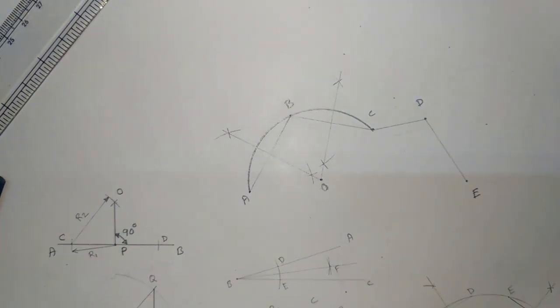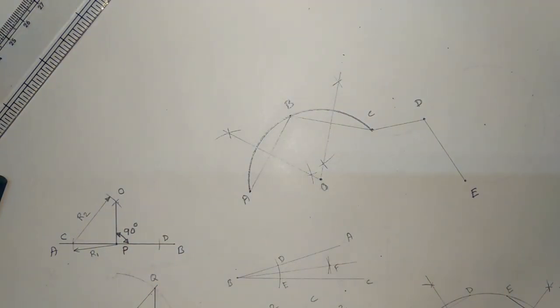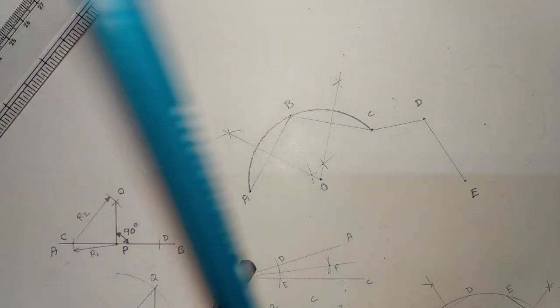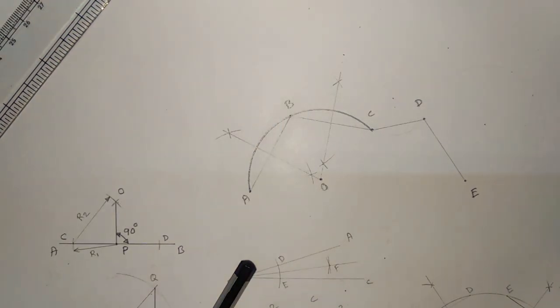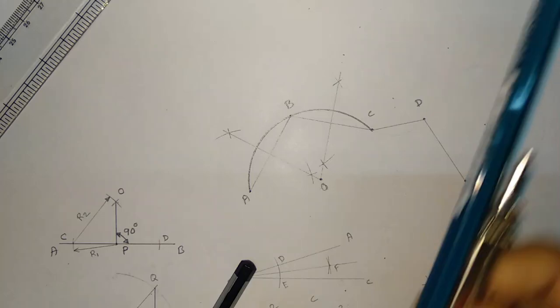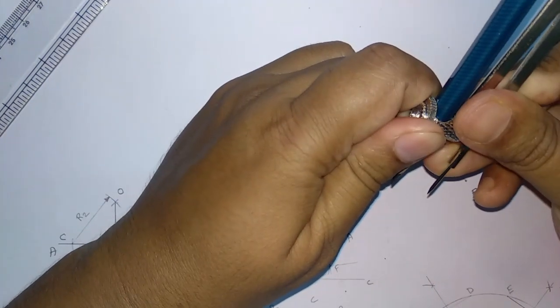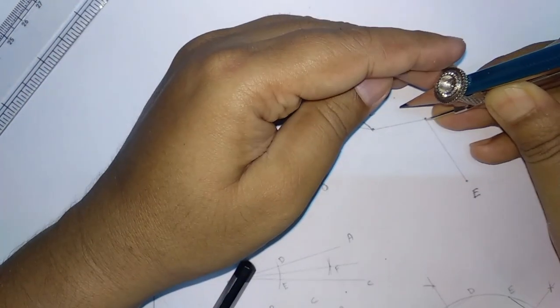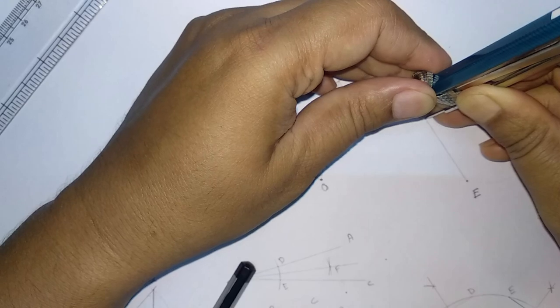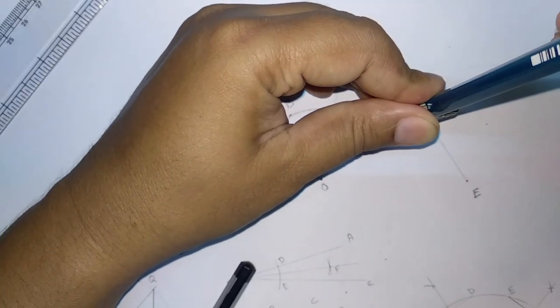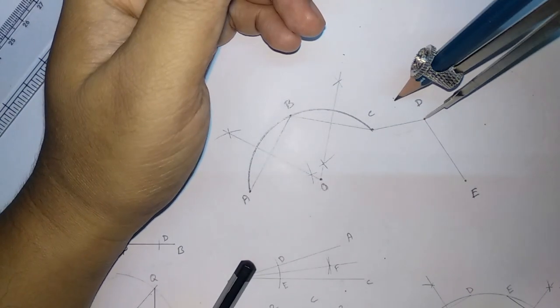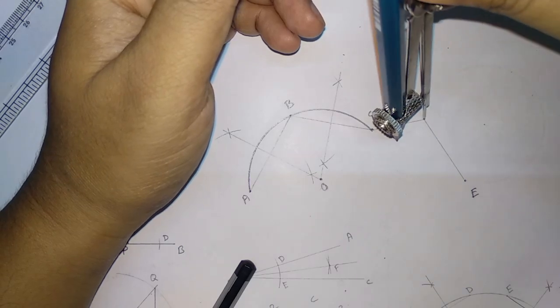So you can see that this curve is going to touch A, B, and C. Now again, a similar approach we are applying. So first I am going to fix, which is max it will draw B and C.